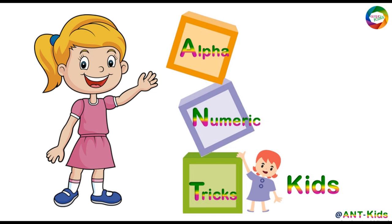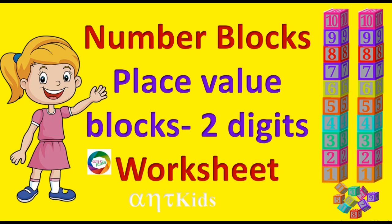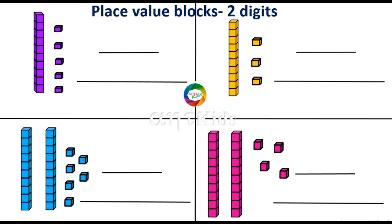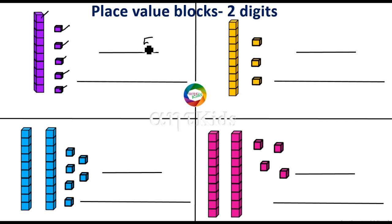Hello children, welcome to Alphanumeric Tricks Kids. Now we will do place value blocks two-digit worksheet using number blocks. Let's start here. One, two, three, four, five — five one-blocks are there, so you have to write five in the ones place. And here one ten-block is there, so in the tens place you have to write one.